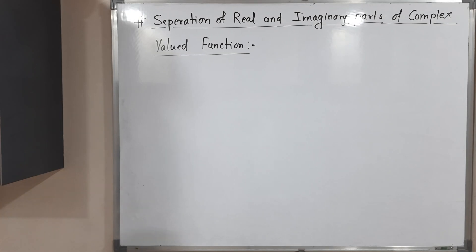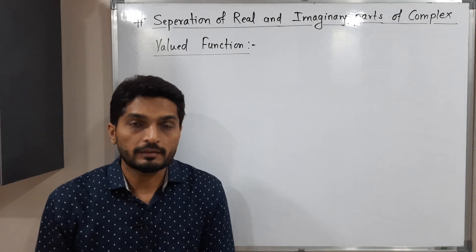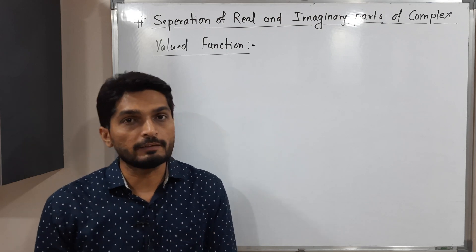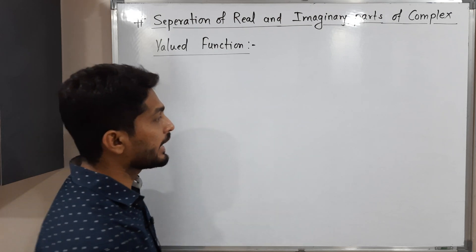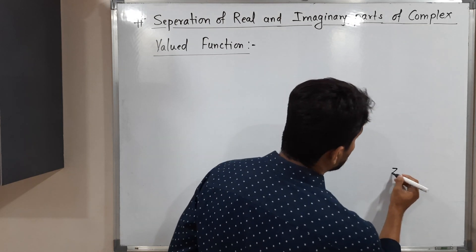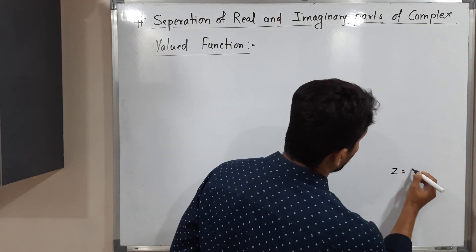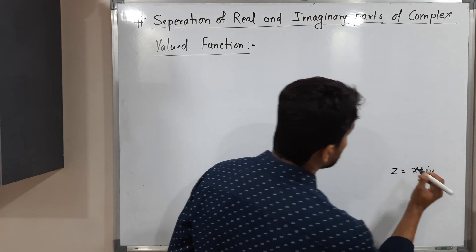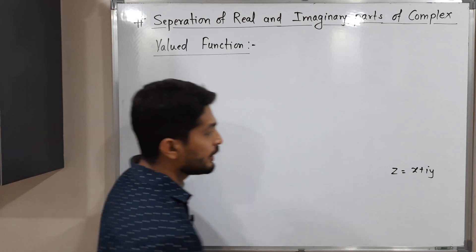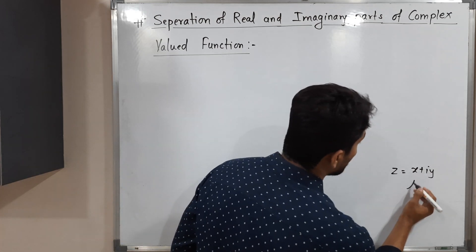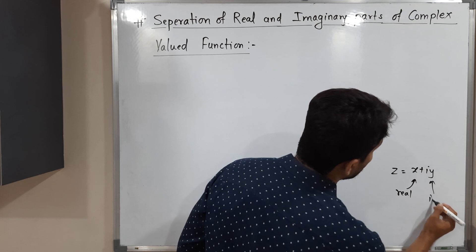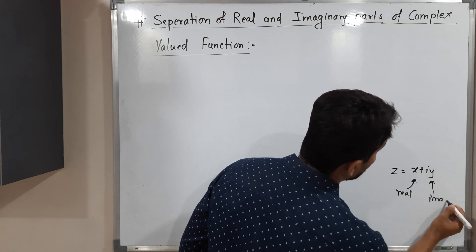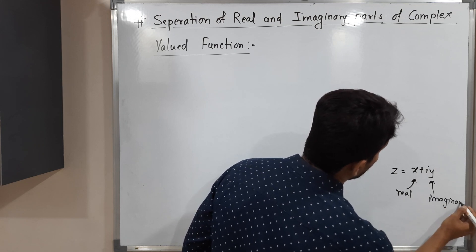Hi everyone. In this video we are going to discuss how to separate the real and imaginary part of a given complex valued function. We are familiar that if we have any complex number z, we can express it as x plus iy, where x is the real part and y is the imaginary part of that complex number.